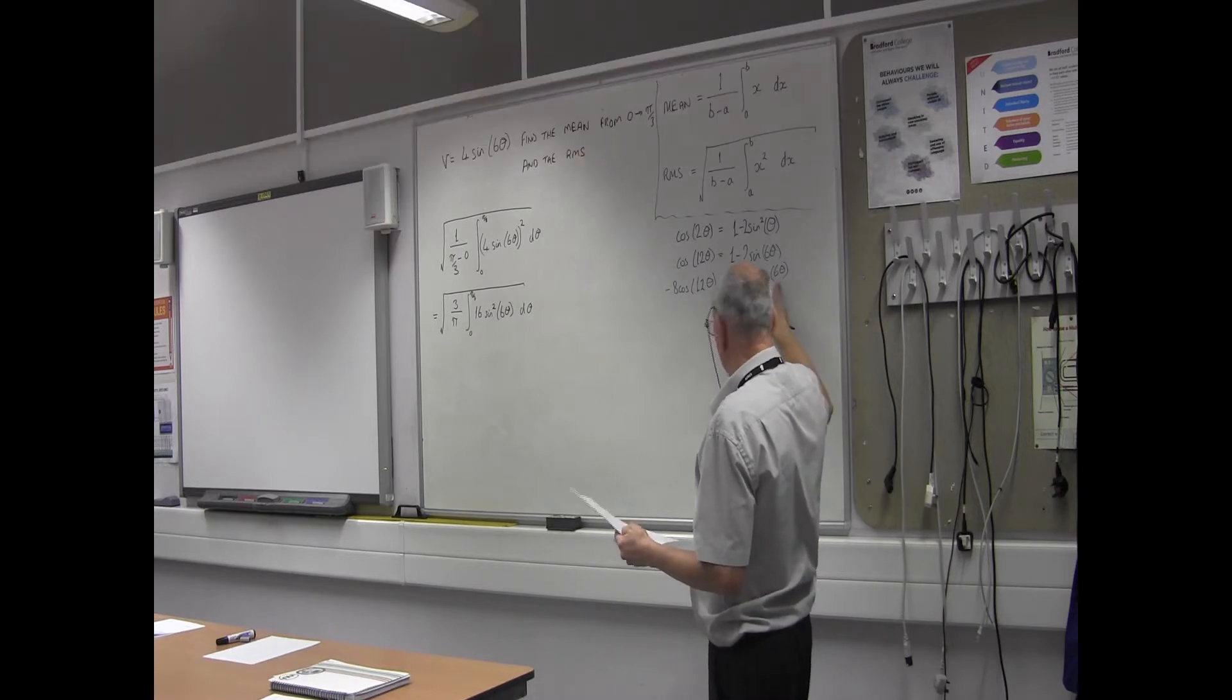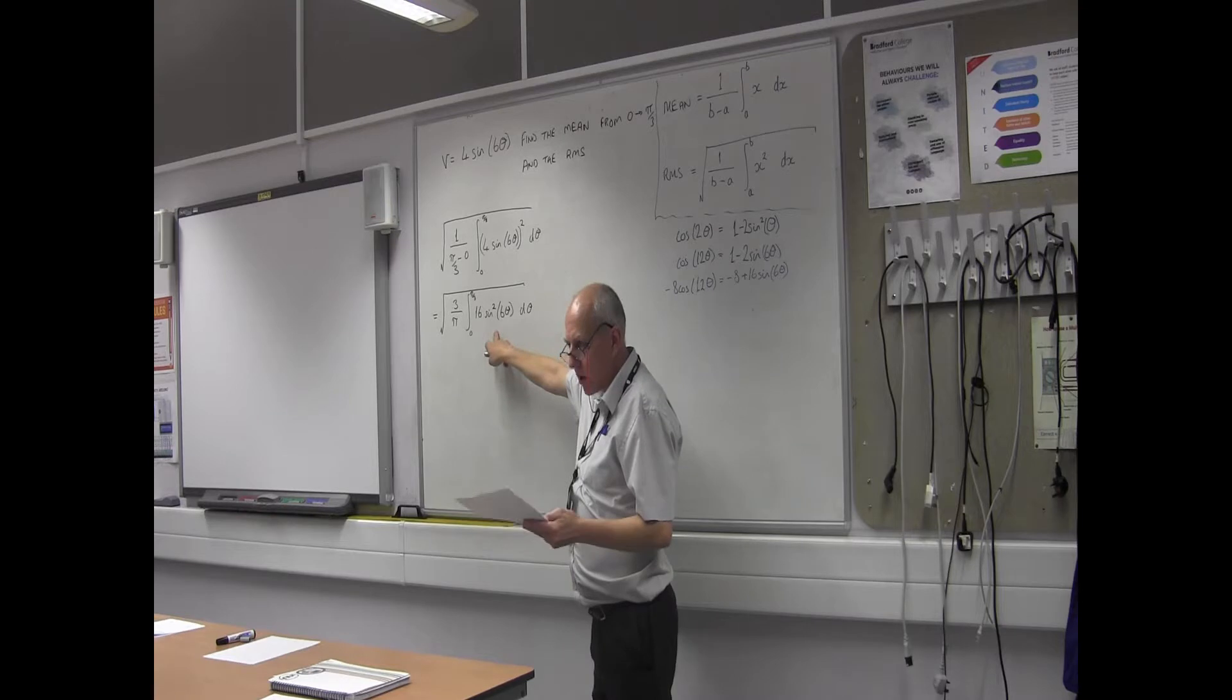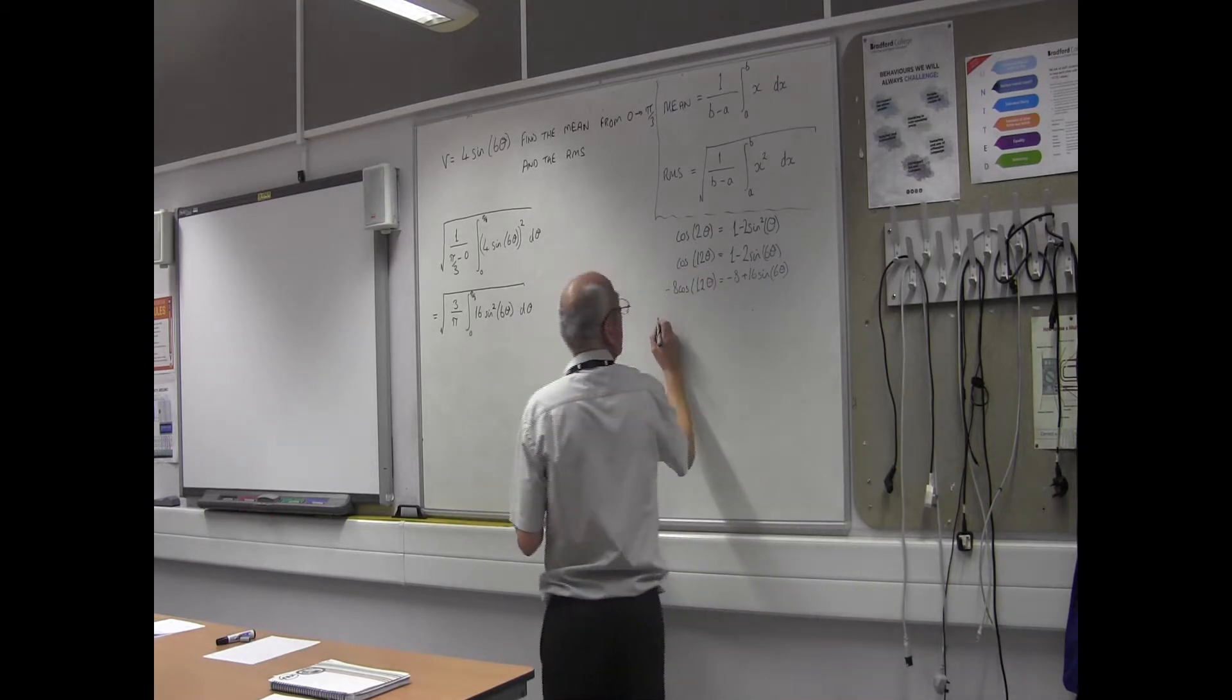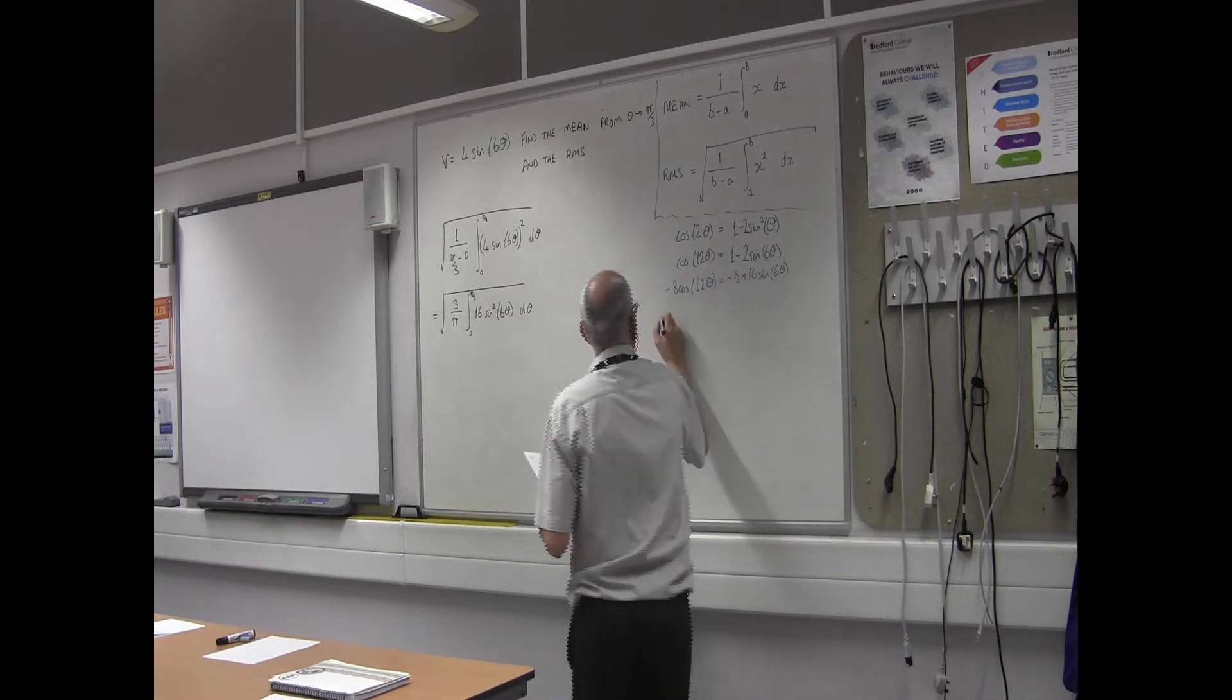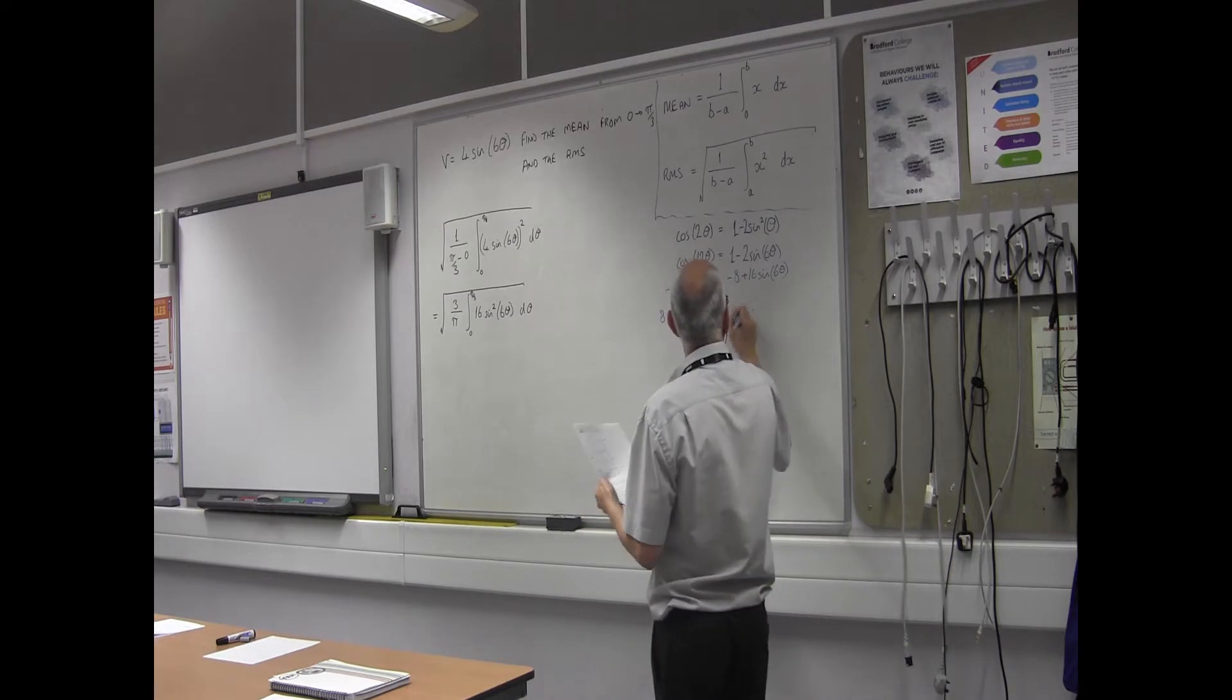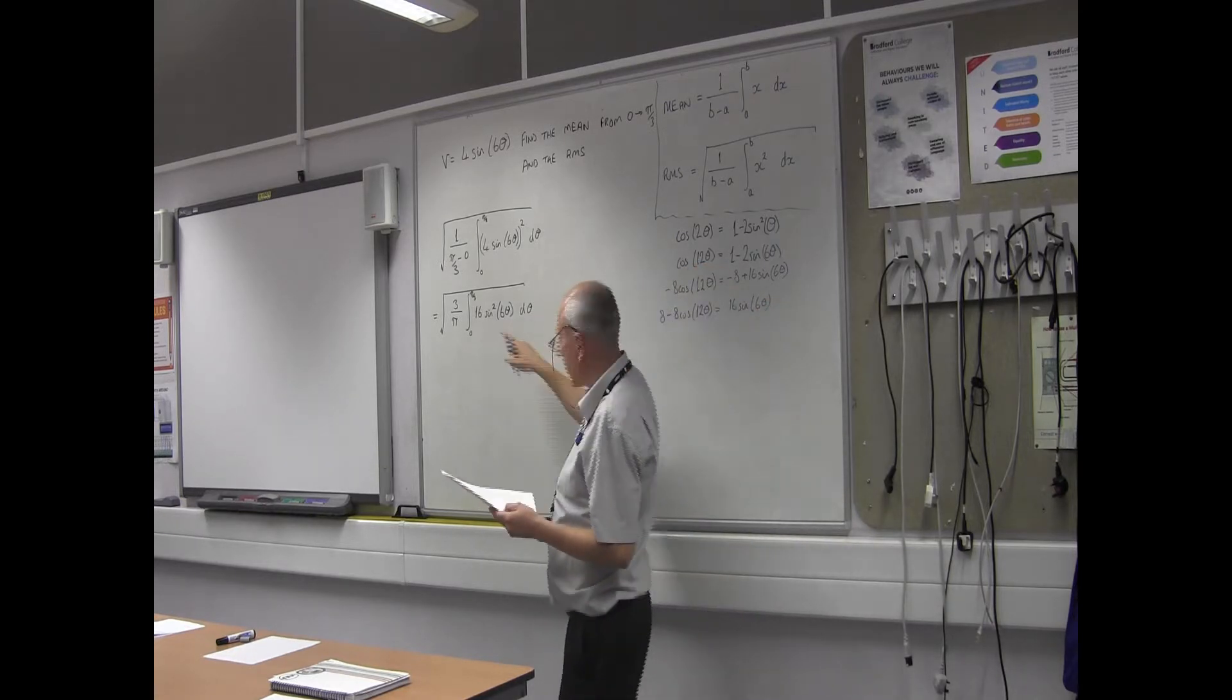And now you see why I did the minus 8, because it's made that positive. So if I shift that 8 to this side, I've now got 16 sine squared 6θ on the right hand side, which I can substitute into this in this place there to put the rest of it in. So in other words, I've got now if I add plus 8 to both sides, I've got an 8 minus 8 cos 12θ equals 16 sine squared 6θ.